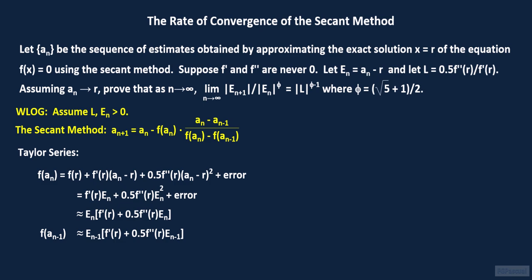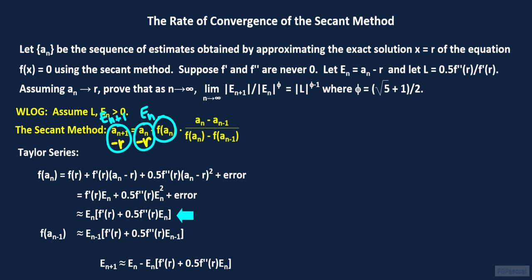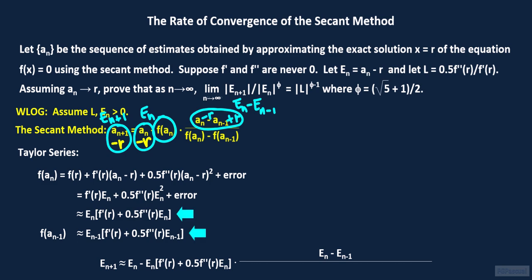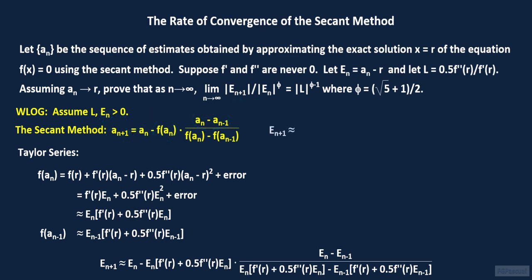In the secant method recursion, we subtract r from both sides. A sub n plus 1 minus r equals e sub n plus 1, and a sub n minus r equals e sub n. We replace f of a sub n by its Taylor approximation. We subtract r from a sub n here and add r to minus a sub n minus 1 here, so that the numerator is actually e sub n minus e sub n minus 1. In the denominator we replace f of a sub n and f of a sub n minus 1 by their respective Taylor approximations.